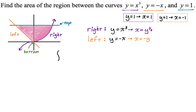So we want the integral from zero to one, and it's the quantity right minus left. The right function is y to the one-third, minus the left function, which is negative y. We close that and say dy — integrating with respect to y.